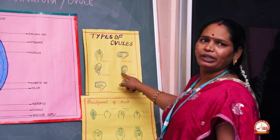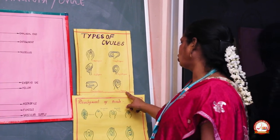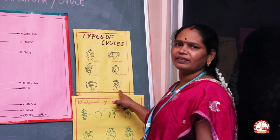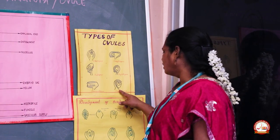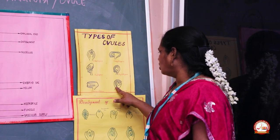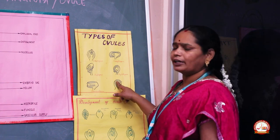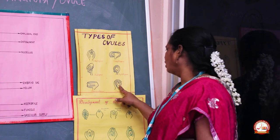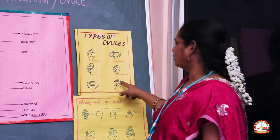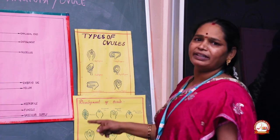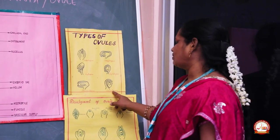Campylotropous is present in the primulaceae seed. The circinotropous is present in the cactus seed, where the funicle is coiled and the ovule is in a coiled position. This type is common in cactus.